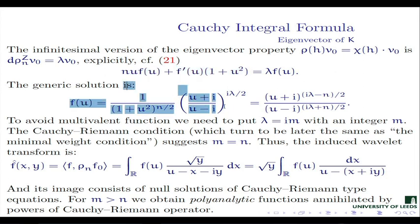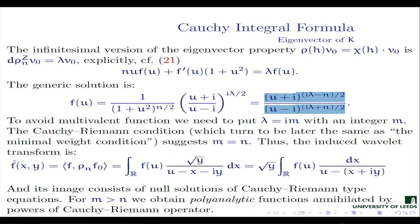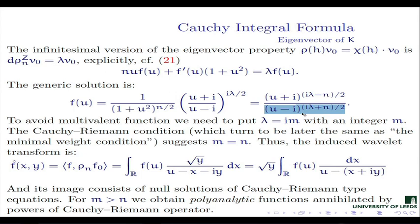This is a first-order differential equation, rather easy to solve. The generic solution of that first-order differential operator would be a certain function — that expression is the generic solution, or if slightly adjusted, we get that fraction. Now, because there are complex powers and we don't want multivalued functions on the real line, the condition is that lambda here is just an integer times the imaginary unit i.